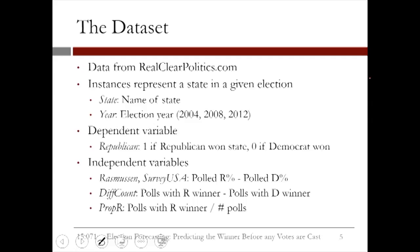The dependent variable, which is called Republican, is a binary outcome. It's one if the Republican won that state in that particular election year, and zero if a Democrat won. The independent variables are related to polling data in that state. For instance, the Rasmussen and SurveyUSA variables are related to two major polls that are run across many different states in the United States.